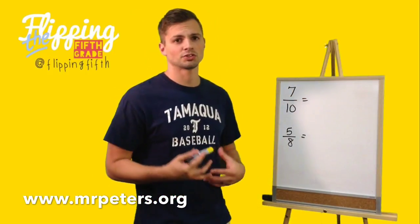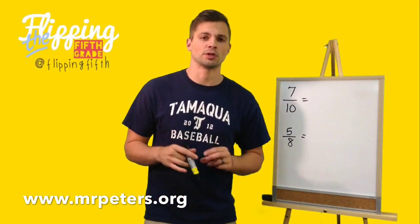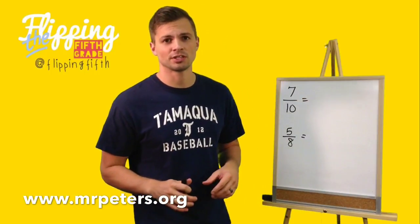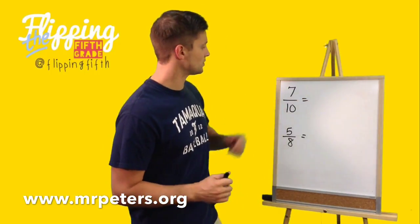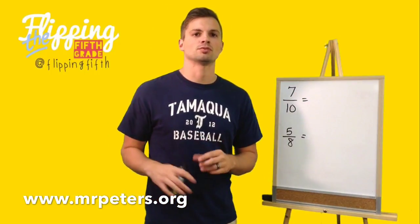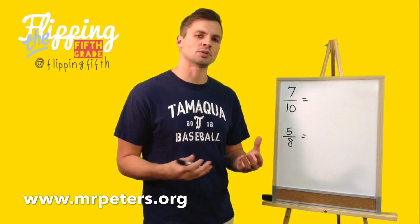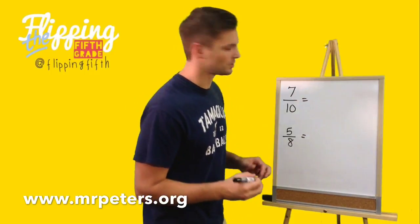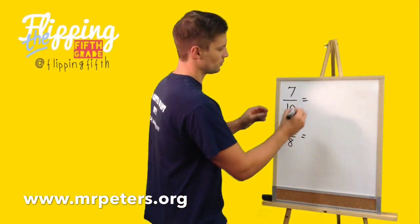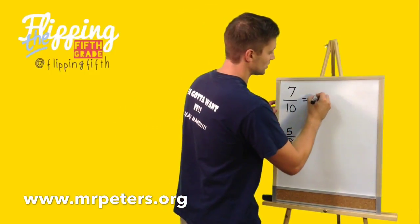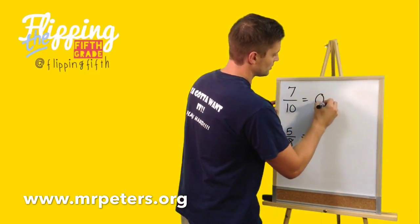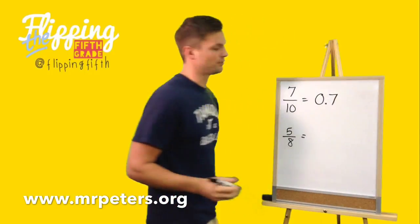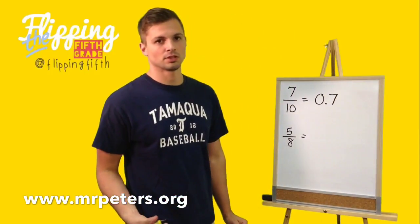I have two fractions here that we're going to write out as decimals. Sometimes it's very easy. For instance, the first one — we have 7 over 10, which is pronounced 7 tenths. So to write that as a decimal, we make it literally 7 tenths: 0.7.